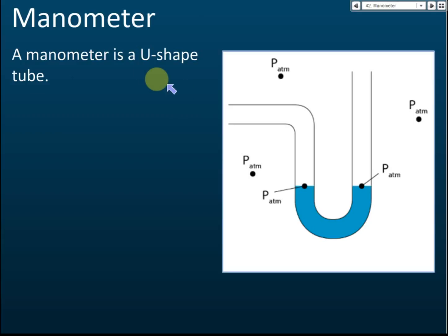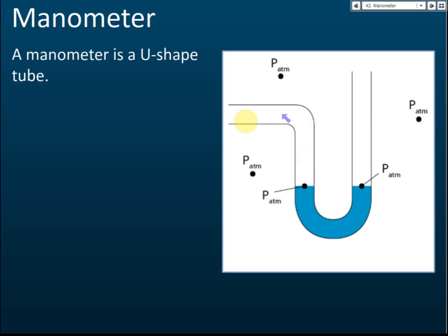The second instrument we use is the manometer. A manometer is a U-shaped tube. Sometimes this part can be L-shaped, but the L-shape is not strictly necessary — you can make both sides straight. We make it L-shaped for ease of connecting it to a container. The manometer is simply a U-shaped tube filled with some liquid.